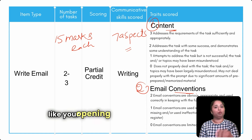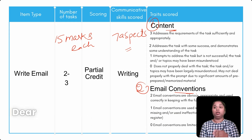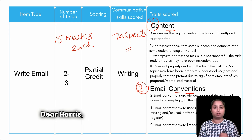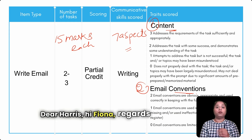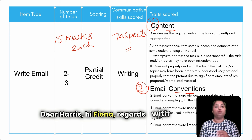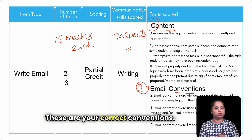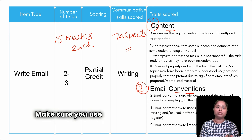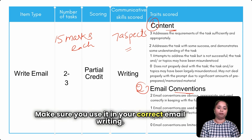Examples of correct email conventions include: 'Dear Harris,' 'Hi Fiona,' 'Regards,' 'With love,' followed by your name. These are your correct conventions — make sure you use them in your email writing.